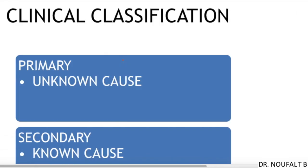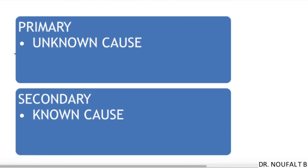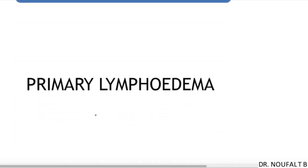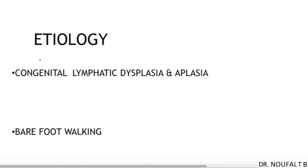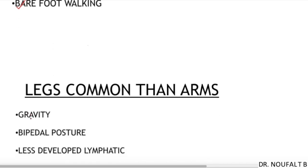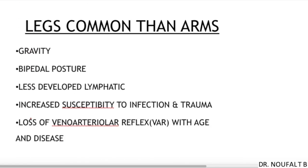After completing clinical staging and grading, we move on to the most important portion: the clinical classification of lymphedema. Lymphedema is primarily divided into primary and secondary lymphedema. Primary lymphedema is due to unknown etiology, while secondary lymphedema is due to a known cause. The proposed etiology for primary lymphedema can be congenital lymphatic dysplasia, aplasia, or barefoot walking.